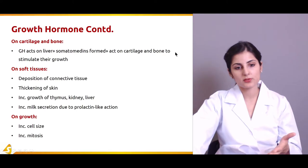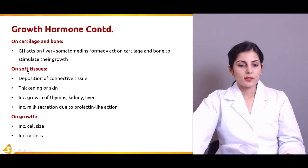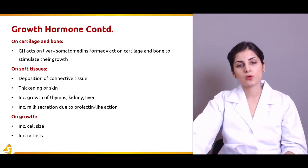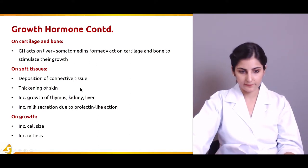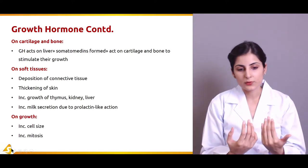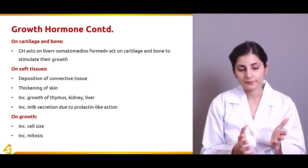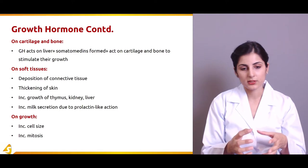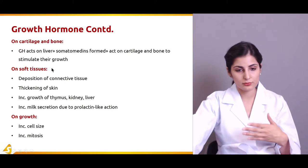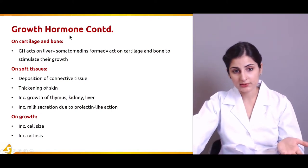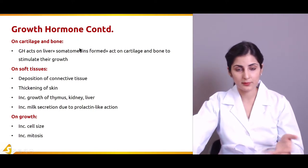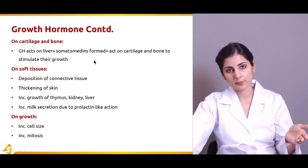Somatomedines act on cartilage and bone to stimulate their growth. On soft tissues, growth hormone increases the deposition of connective tissue, causes thickening of the skin, causes growth of certain organs such as the thymus, kidney, and liver, and increases milk secretion due to prolactin-like action. Generally, it increases both the number and size of cells. If growth hormone is deficient, all these systems are affected; if it is in excess, these effects become pronounced and can be very harmful — which we will discuss in the abnormalities section.